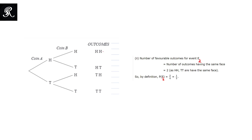In the experiment of tossing a coin twice, HH and TT would be the favorable outcomes. So the probability of event E2 would be equal to the number of favorable outcomes, which is 2, divided by the number of total outcomes, which is 4. We can simplify this further to 1/2.